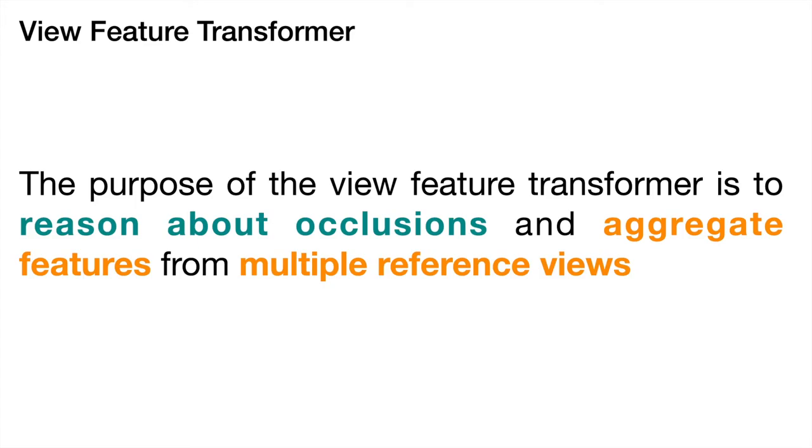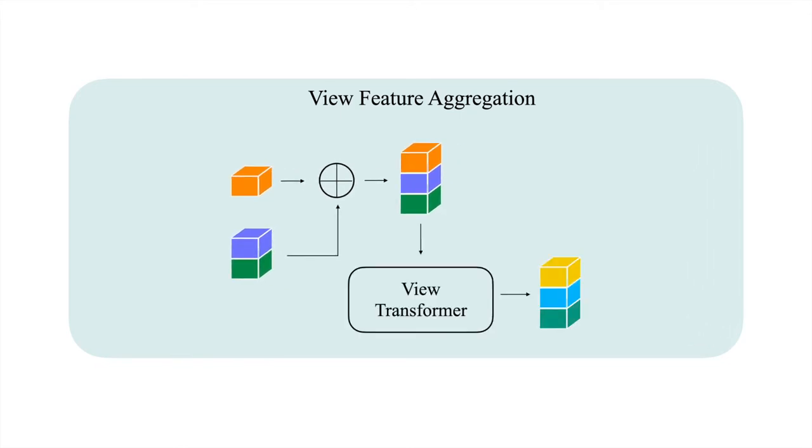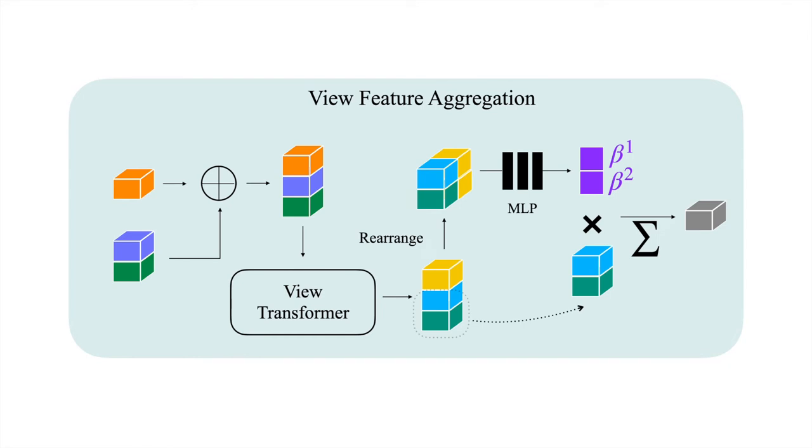Similarly, at the core of the view feature aggregator is the view feature transformer. The purpose of the view feature transformer is to reason about occlusions and aggregate features from multiple reference views. This module takes as input the aggregated features from each epipolar line to estimate a pairwise attention weight for each view with respect to the target ray.